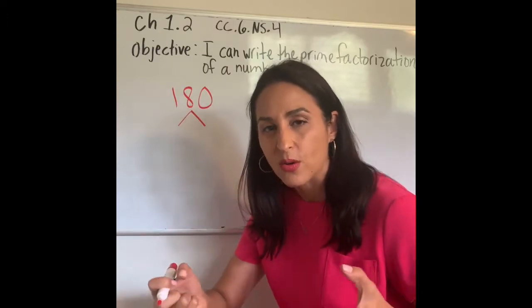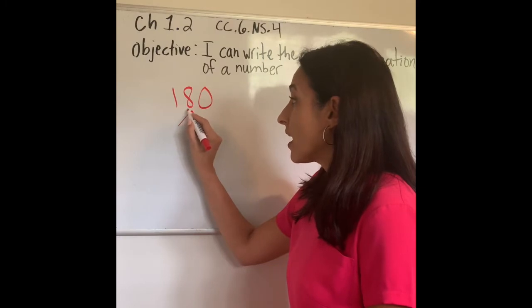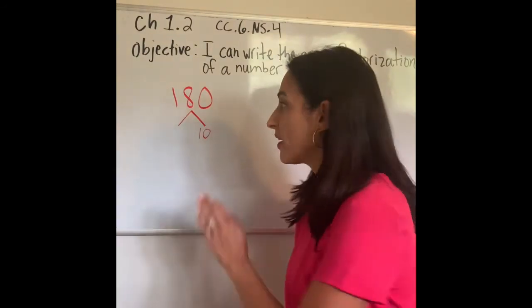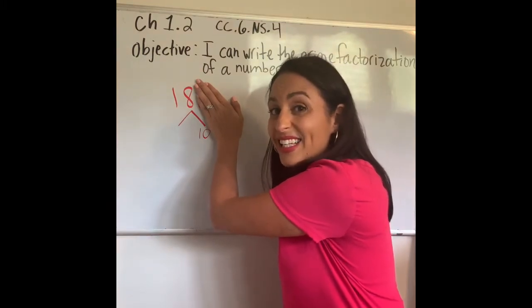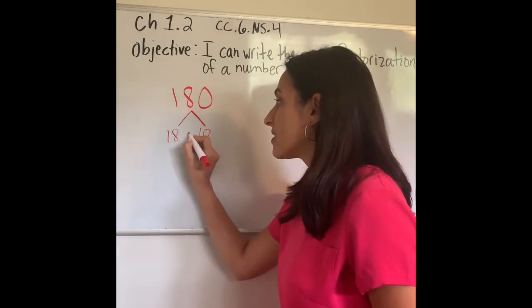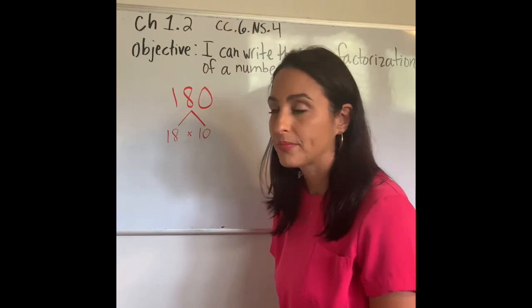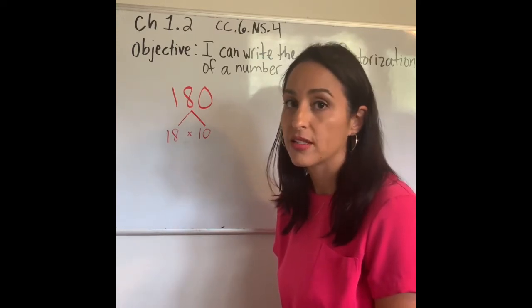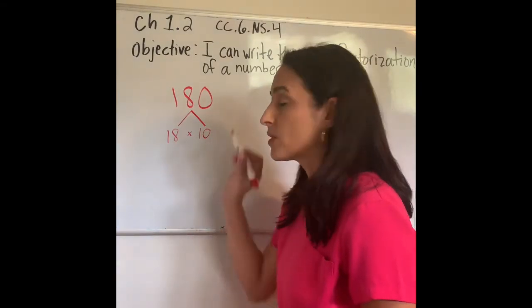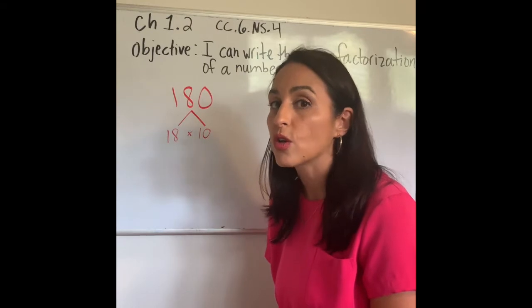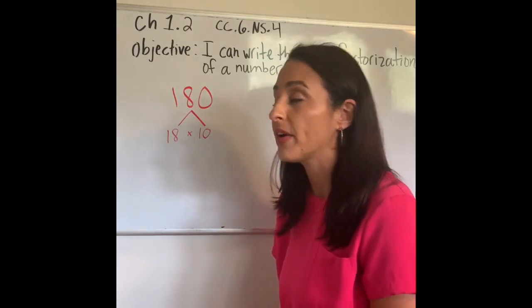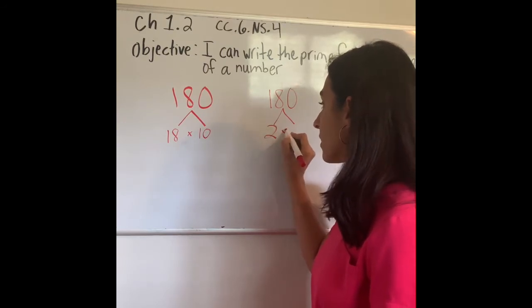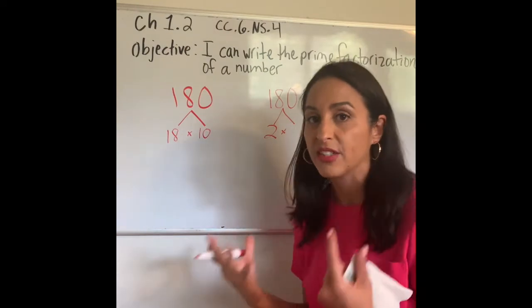We're going to put a little arrow right above 180 and start to decompose — decompose means break it down. I know a number times 10 gives me 180. If I take away the zero, I get 18. So 18 times 10 gives me 180. Using divisibility rules will really help you. Another way I could have done this is to divide by 2, since 180 ends with zero and is an even number. We'll come back to that to show you there are many different ways to do prime factorization.